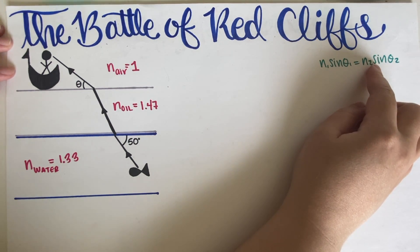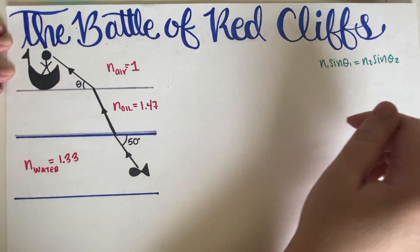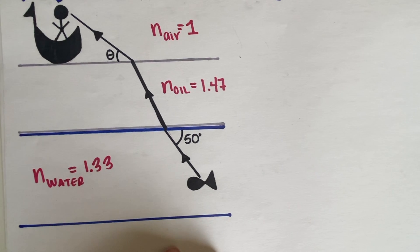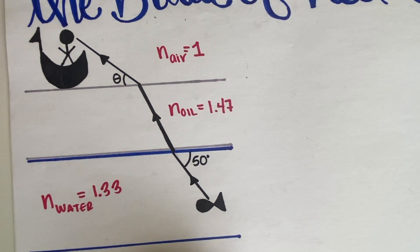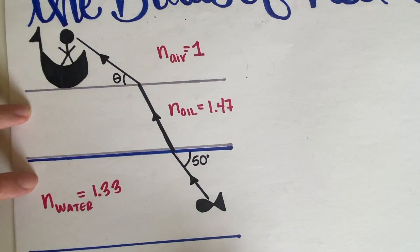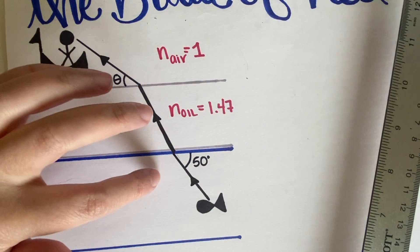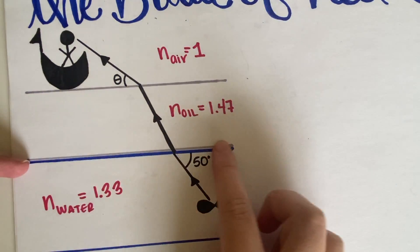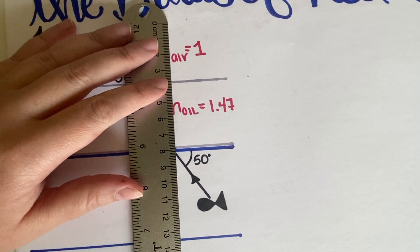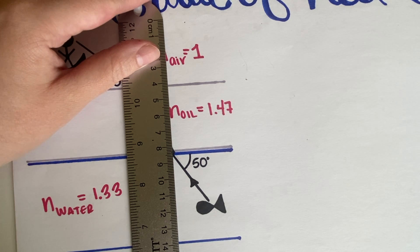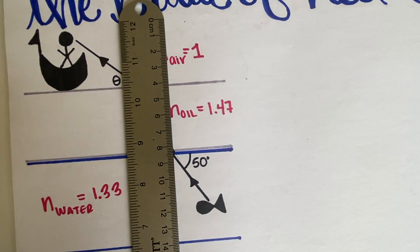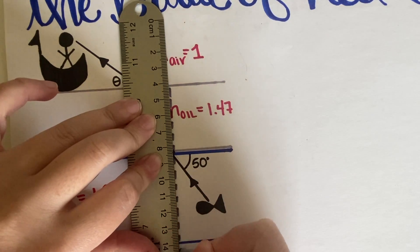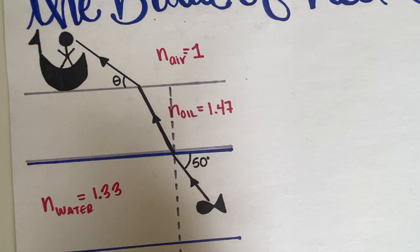The way I recommend approaching this problem is to start from the bottom and work your way upward. Every single time you use Snell's law, you want to draw an imaginary line perpendicular to the interface. So for example, if this is where the interface changes, you draw a line perpendicular to it — that's what I'm going to do right now.